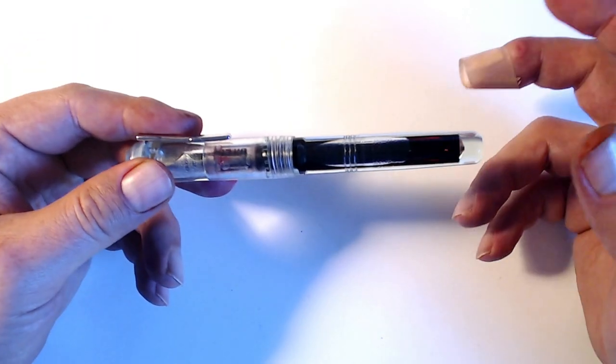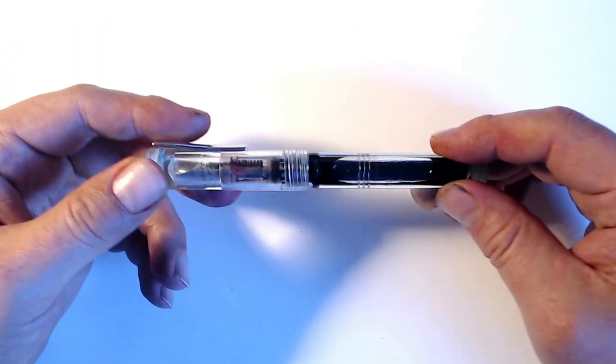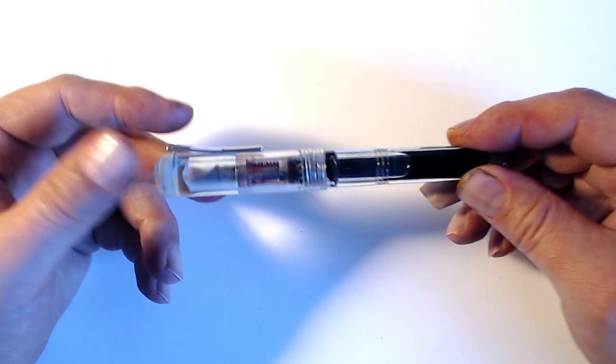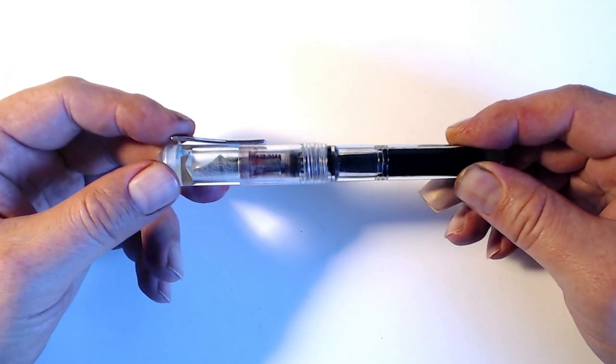Also, since you're drawing up ink with an eyedropper, you can use all of the ink in the bottle way past the point where you can easily fill up your self-filling pens because the ink level is too shallow.